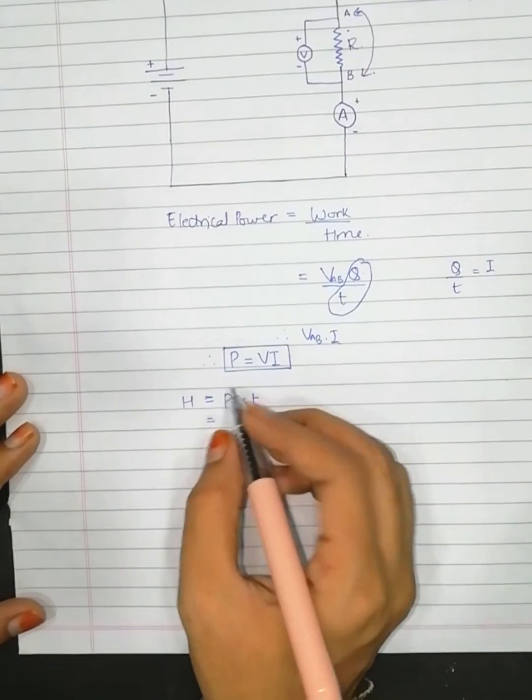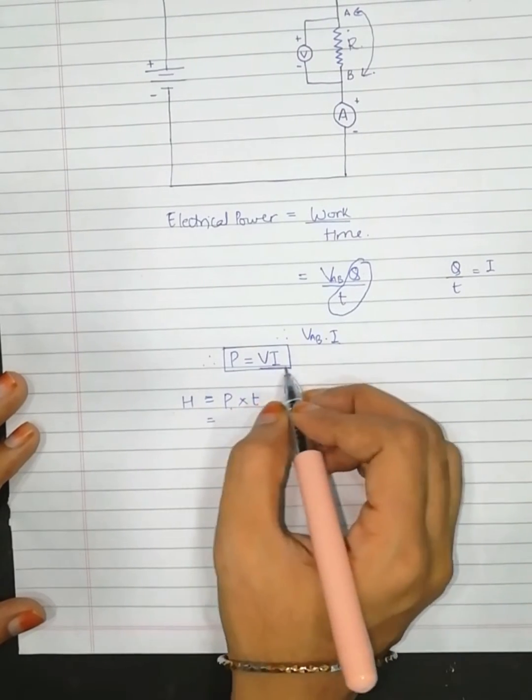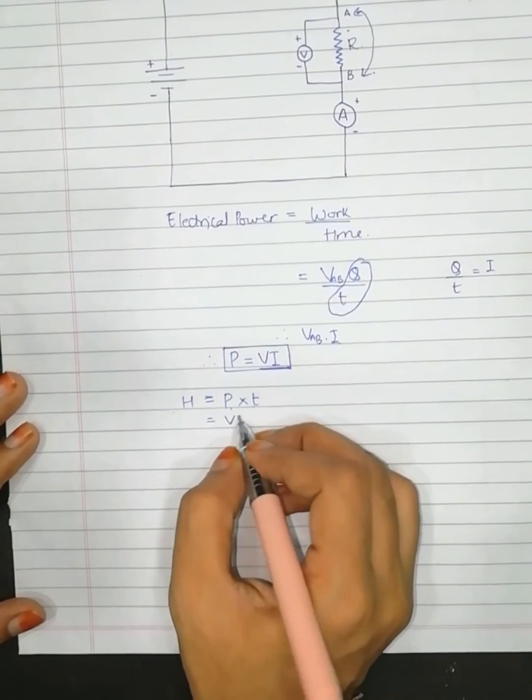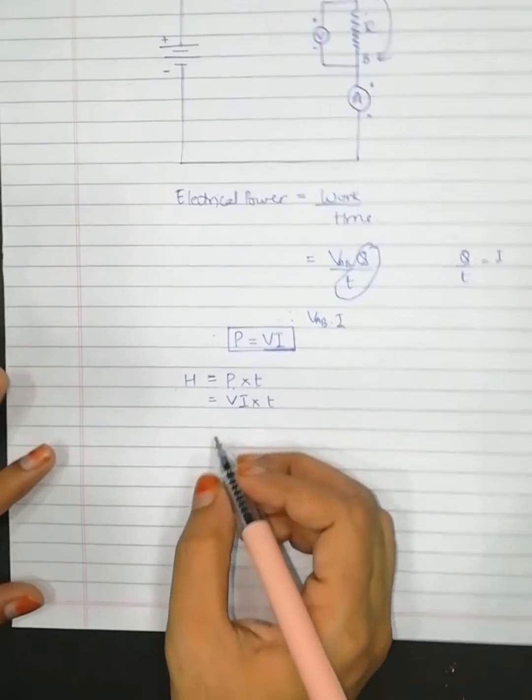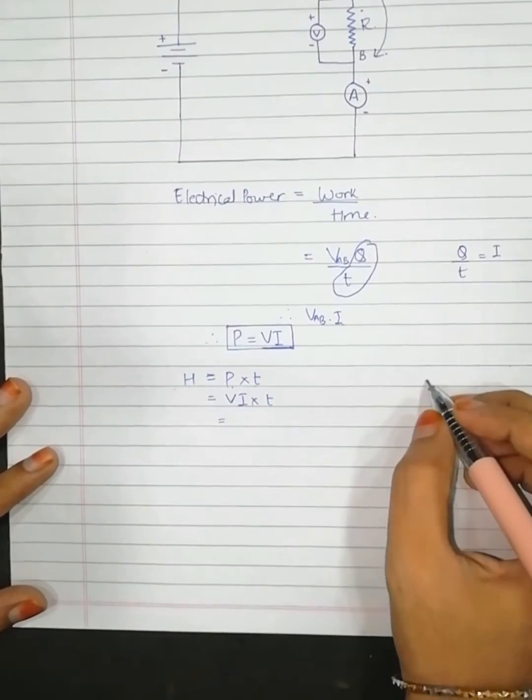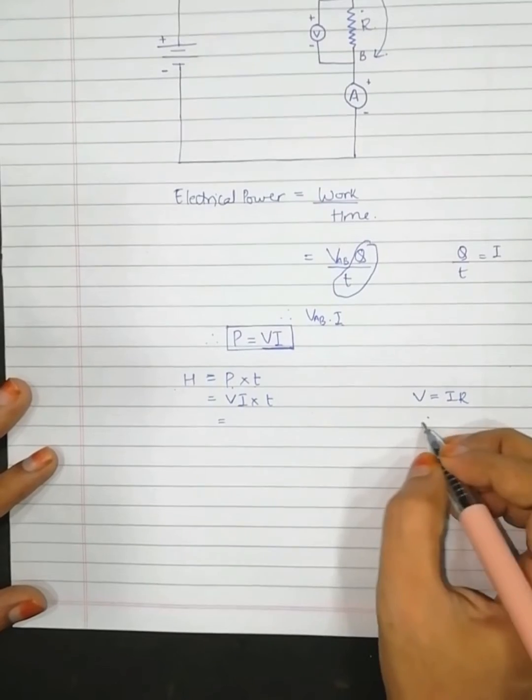Due to the flow of current, the heat is produced causing the resistor to get heated. So heat is given as power into time. We have power as V into I, so V into I into T.